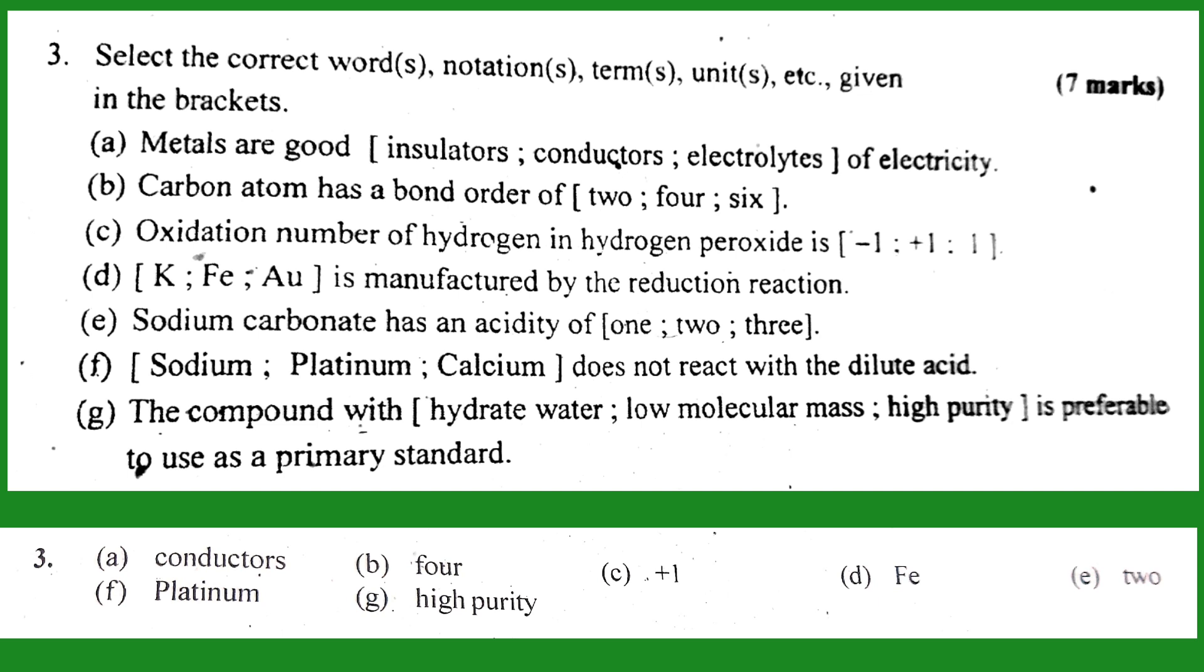Number D: Fe is manufactured by the reduction reaction. The answer is Fe. Number E: sodium carbonate has an acidity of two. Sodium carbonate is Na₂CO₃. If you have this compound, it has two replaceable hydrogens.